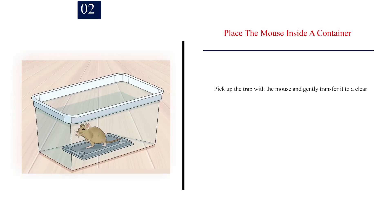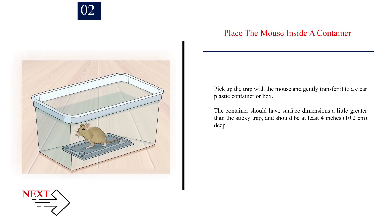Number 2: Place the mouse inside a container. Pick up the trap with the mouse and gently transfer it to a clear plastic container or box. The container should have surface dimensions a little greater than the sticky trap and should be at least 4 inches, 10.2 centimeters deep.